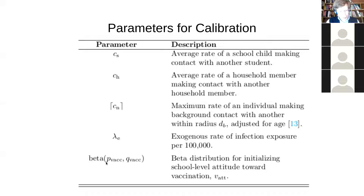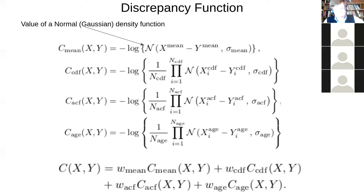They have to do with contact rates at school and home, and in the community, as well as kind of this exogenous infection rate from outside, you know, that might reflect travelers, for example, which are known to have caused outbreaks in Alberta, for pertussis and or measles. And I probably should have noted that schools here were characterized as having kind of an overall school level attitude towards vaccination.